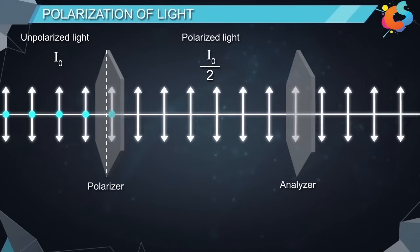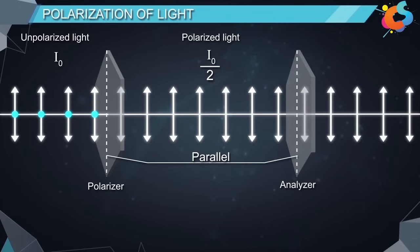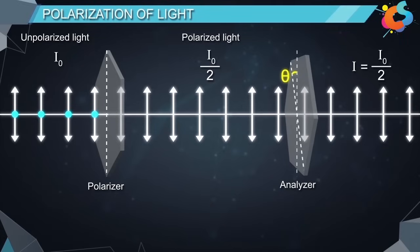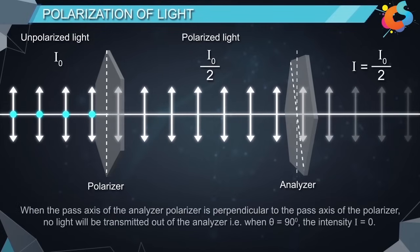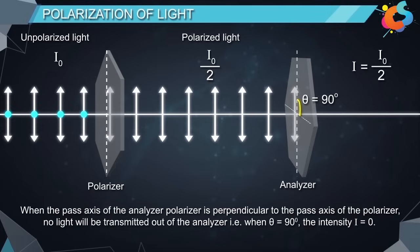If we pass this plane polarized light through another polaroid — called the analyzer — when the pass axis of the polarizer is parallel to the pass axis of the analyzer, the emergent light will have no change in intensity. That is, when theta equals 0° or 180°, the intensity is maximum: I = I₀/2. If the analyzer is rotated by an angle theta, the intensity of the emergent light decreases. When the pass axis of the analyzer is perpendicular to the pass axis of the polarizer, no light will be transmitted. That is, when theta equals 90°, the emergent intensity I = 0.